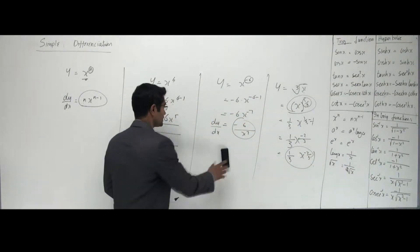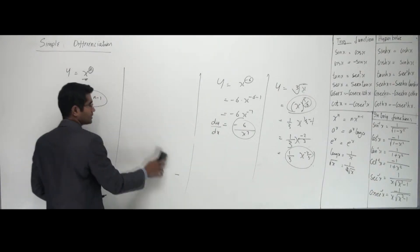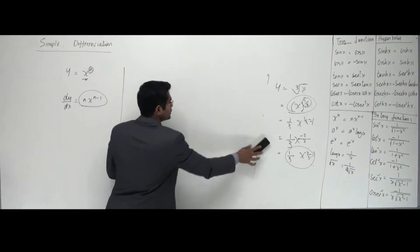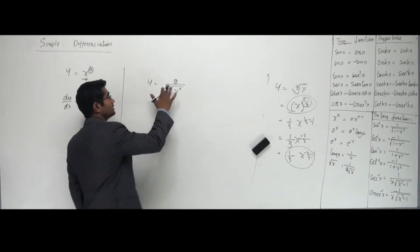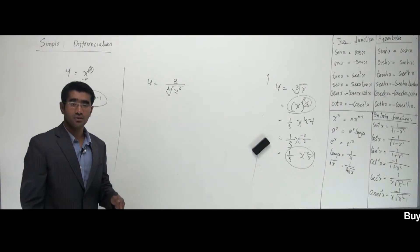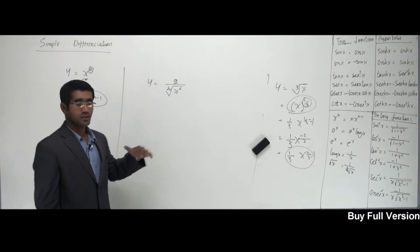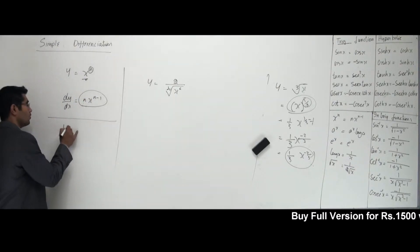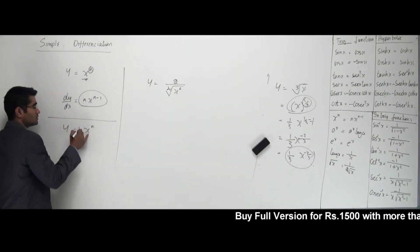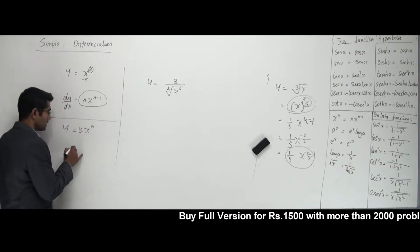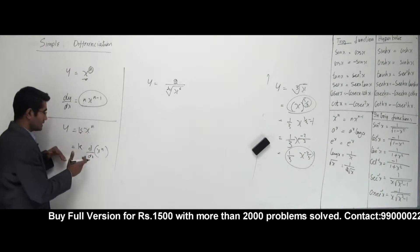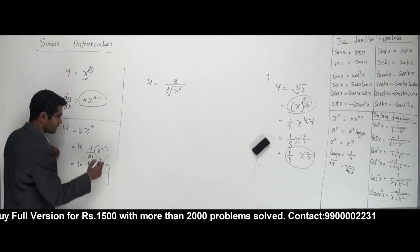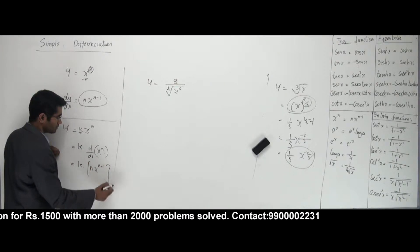Let's continue with more simple problems. Remember, I can only differentiate something that looks like y equals x to the power n. Let's add another formula: if y equals k times x to the power n, where there is a constant k, I keep k outside and only differentiate x to the power n. So the formula becomes k times n into x to the power n minus 1.